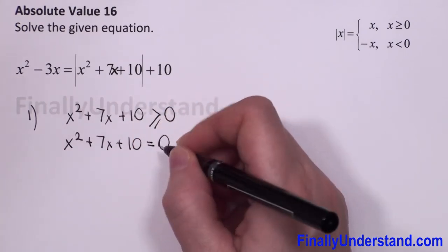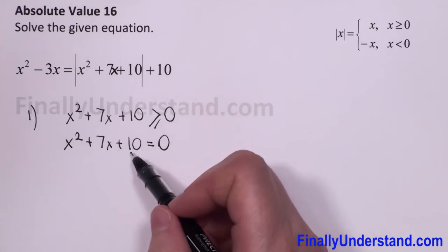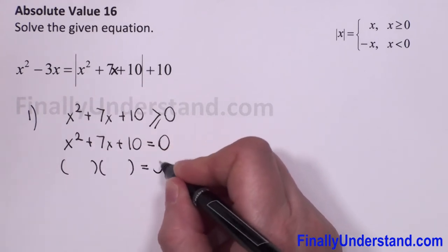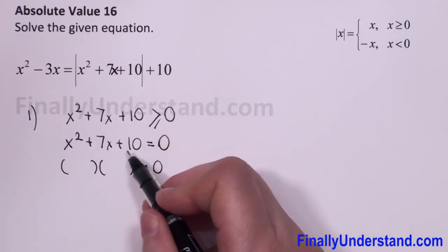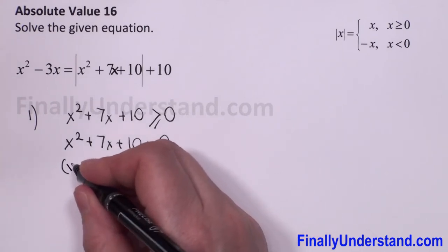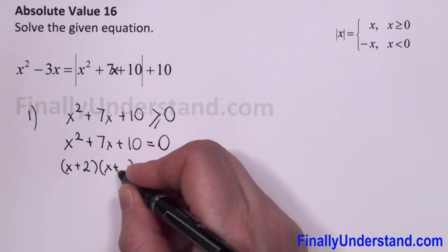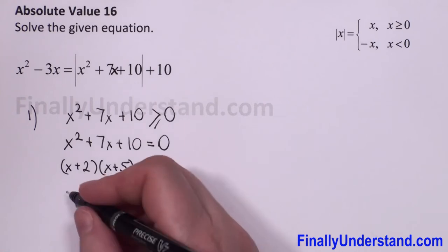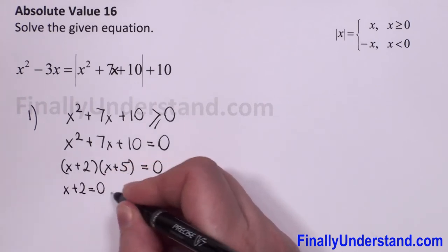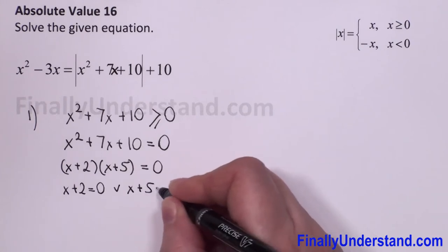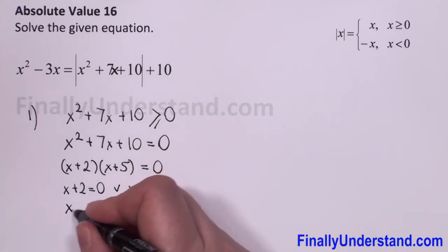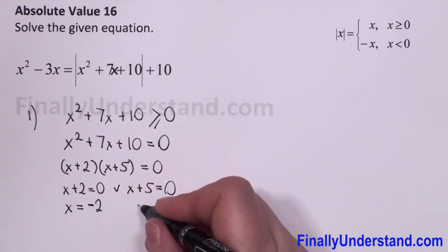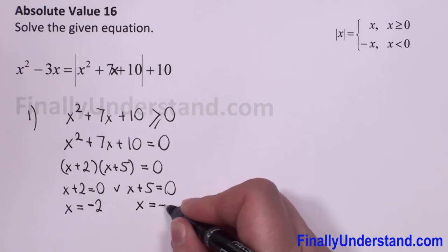We can use factoring. I need to find two numbers which multiply to give 10 and add to give 7, so it factors as (x+2)(x+5). The left side equals zero when x+2=0 or x+5=0, giving us x equals negative 2 and x equals negative 5.